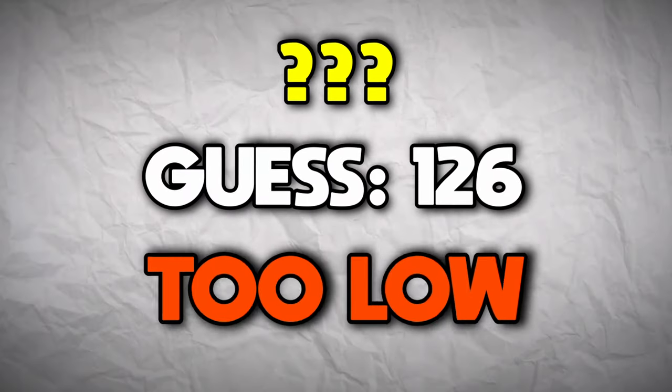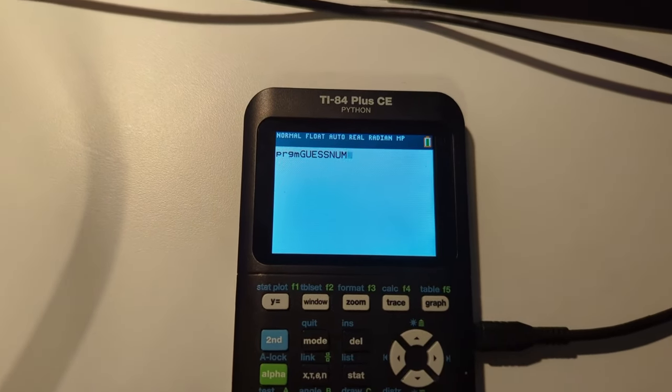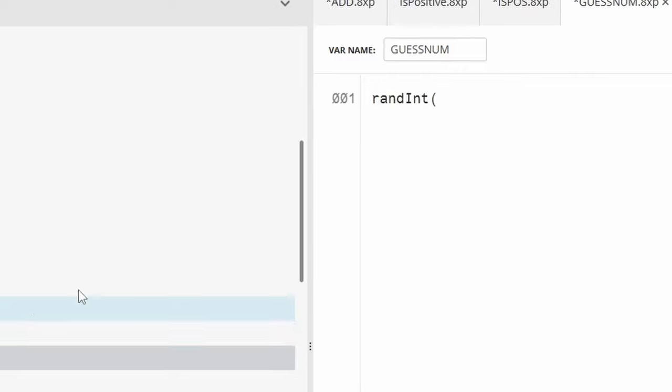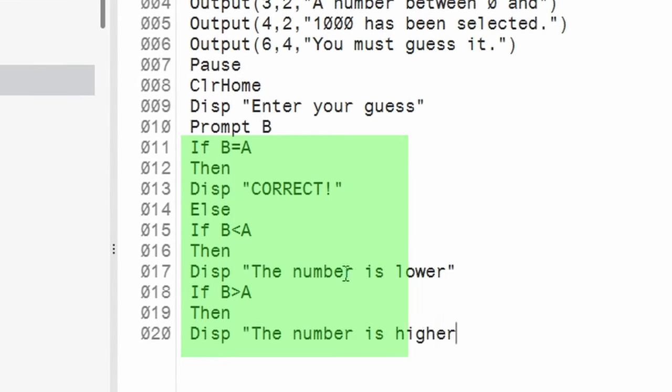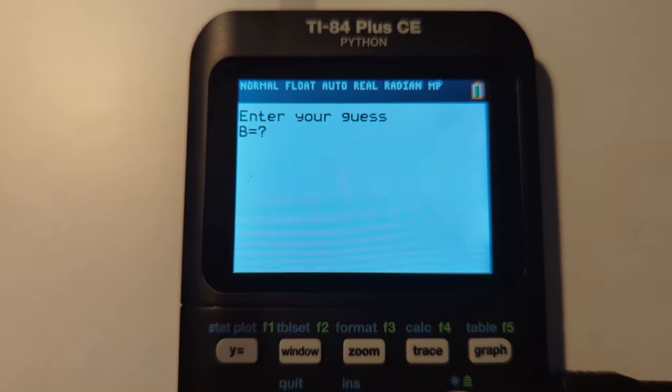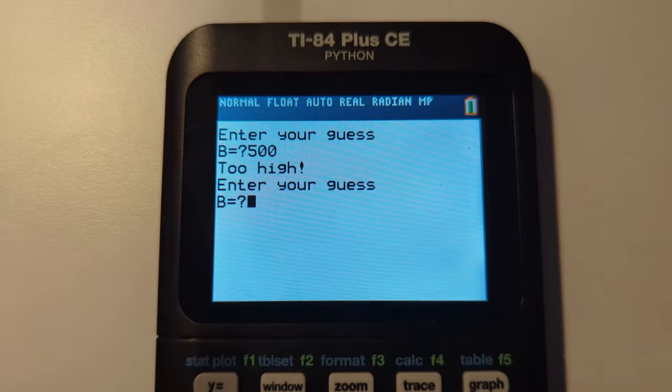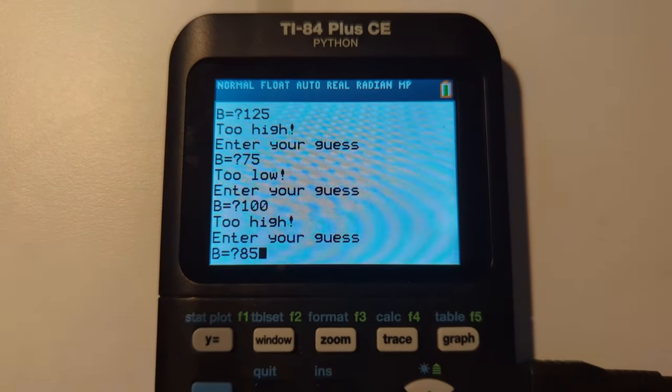For a number guessing game to work, you of course need to generate a random number and tell the player if it is higher or lower than their guess. It turns out that this wasn't too hard on the calculator. I just used this rand int function for the random number, and then used prompt and some if statements to check if the guess was right or not. Eventually, after playing around with the formatting and how everything gets displayed, I had a working number guessing game, and honestly this made me really happy and proud, even for something so simple.